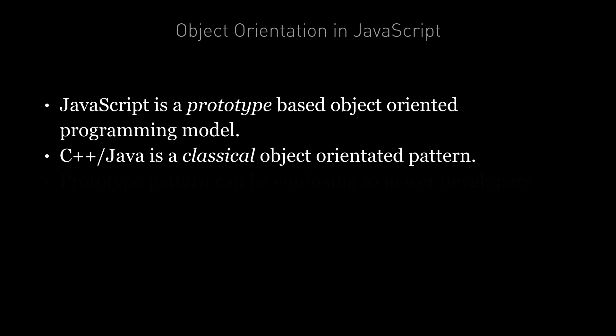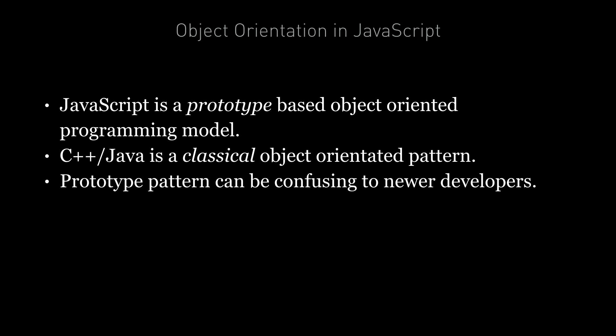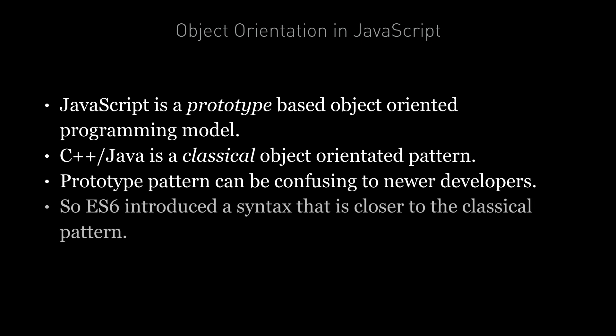Although the prototype pattern is a valid way to implement object-orientation, it can be confusing for newer JavaScript developers or developers used to the classical pattern. So in ES6 we have an alternative syntax — one that more closely matches the classical object-oriented pattern as seen in other languages. But under the hood, this new syntax still uses the prototype pattern with constructor functions and the prototype chain. However, it provides a more common and convenient syntax with less boilerplate code.